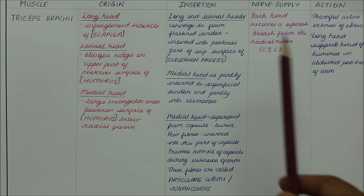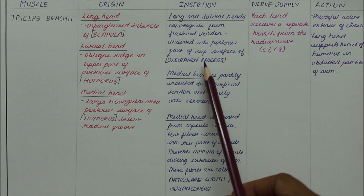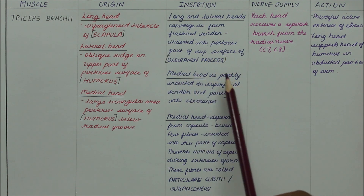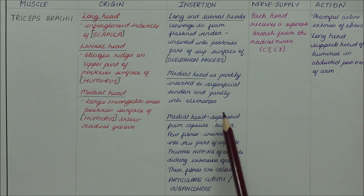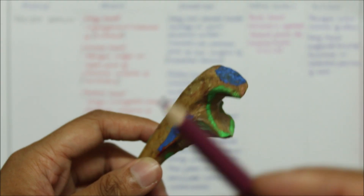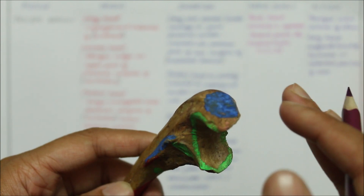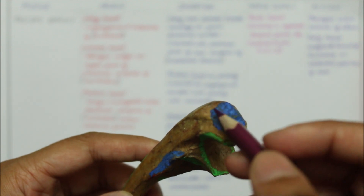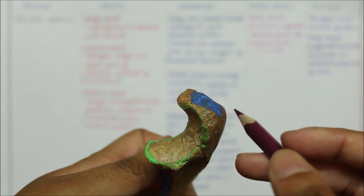Moving on to the insertion of the triceps brachii, the long and lateral heads converge to form a flattened tendon which is inserted into the posterior part of the superior surface of the olecranon process of the ulna. The medial head is partly inserted into the superficial tendon and partly into the olecranon. Additionally, the medial head is separated from the capsule by a bursa, and some fibers insert into the capsule to prevent nipping during extension — these are called the articularis cubiti or subanconeus.